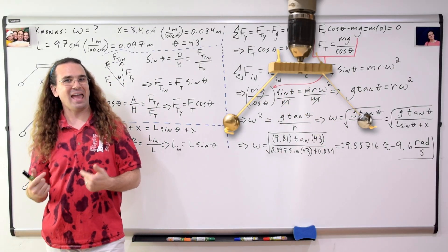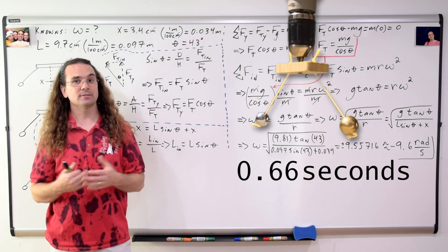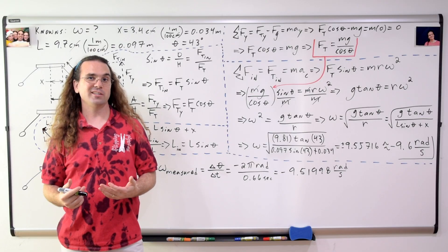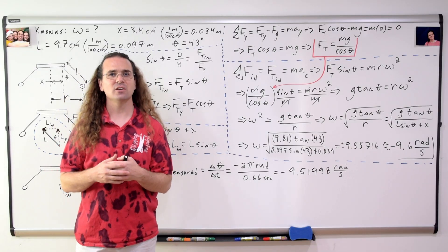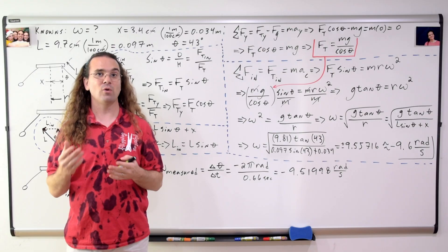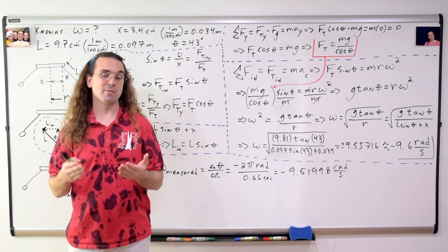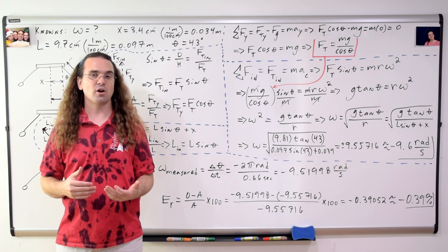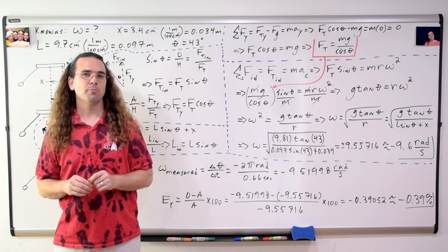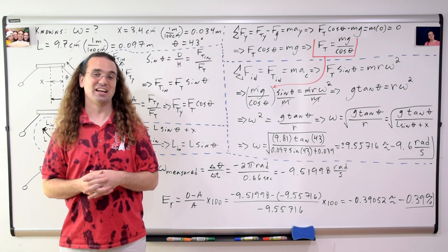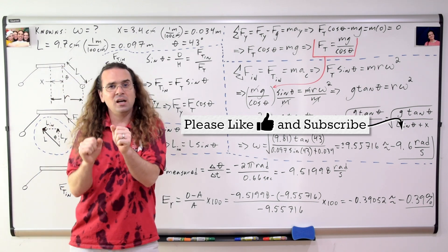Now let's check our answer. We can measure the angular velocity of the spheres using the video. All we need is the time for one full revolution, which is 0.66 seconds. The measured angular velocity equals angular displacement over change in time, which for one full revolution is negative 2 pi radians — negative because of the right hand rule — over 0.66 seconds, which works out to be negative 9.51998 radians per second, which is pretty close to what we predicted with our known values. Using the relative error equation with our measured value as the observed value and our predicted value as the accepted value, we get a negative 0.39 percent difference between what we predicted and what we observed. Which means we get to say: The physics works! The physics works! The physics works!